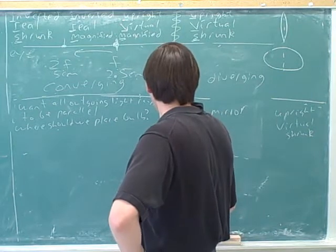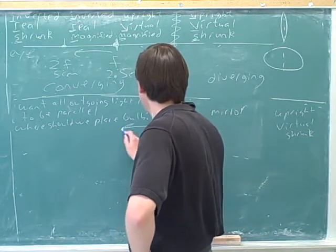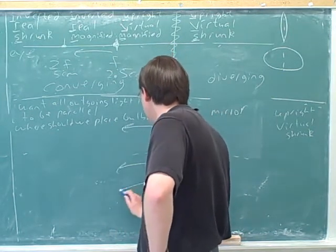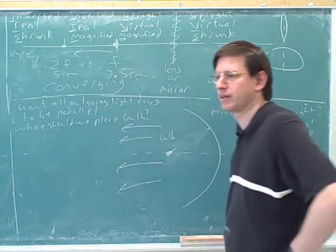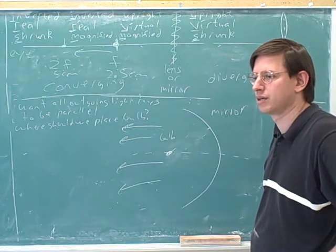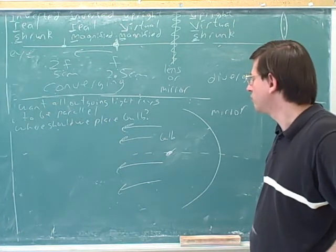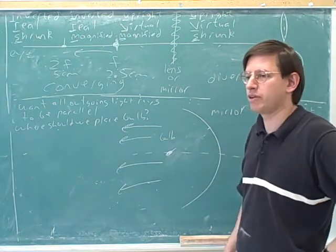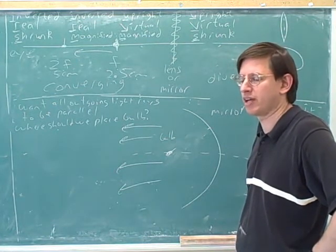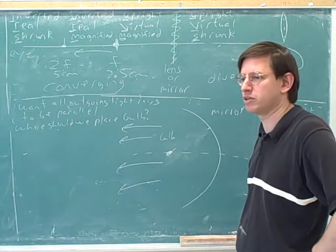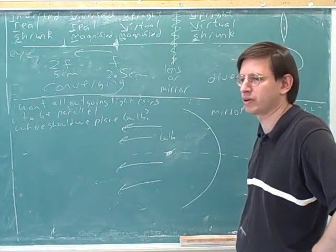Well, the only way that all the outgoing light rays can be parallel is if they're all horizontal, if they're all parallel to this axis. Well, what does it take to get an outgoing light ray to be parallel to the axis? Where should the incoming light ray, what type of incoming light ray do we need for the outgoing light to be parallel to the axis?